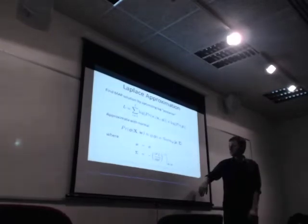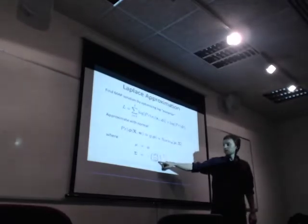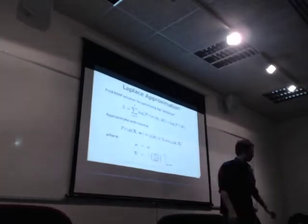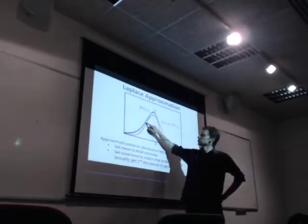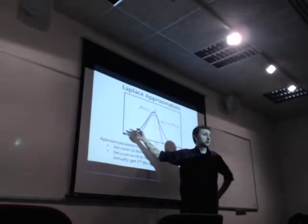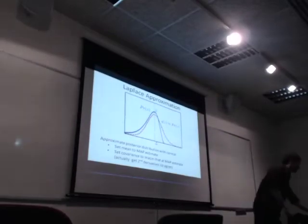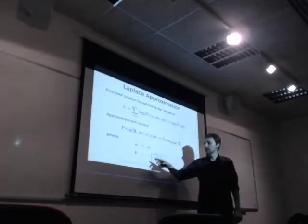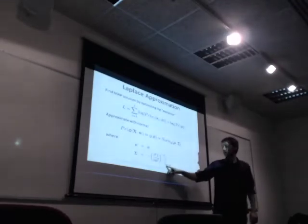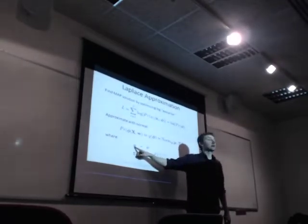That tells you what your mean is, and we set our covariance to be the reciprocal — one divided by the second derivative of our Laplacian with respect to each of the parameters. That's why we're setting our covariance so that it agrees at the mean — at the point where phi equals phi-hat, the phi-hat we're using to define our mean mu.